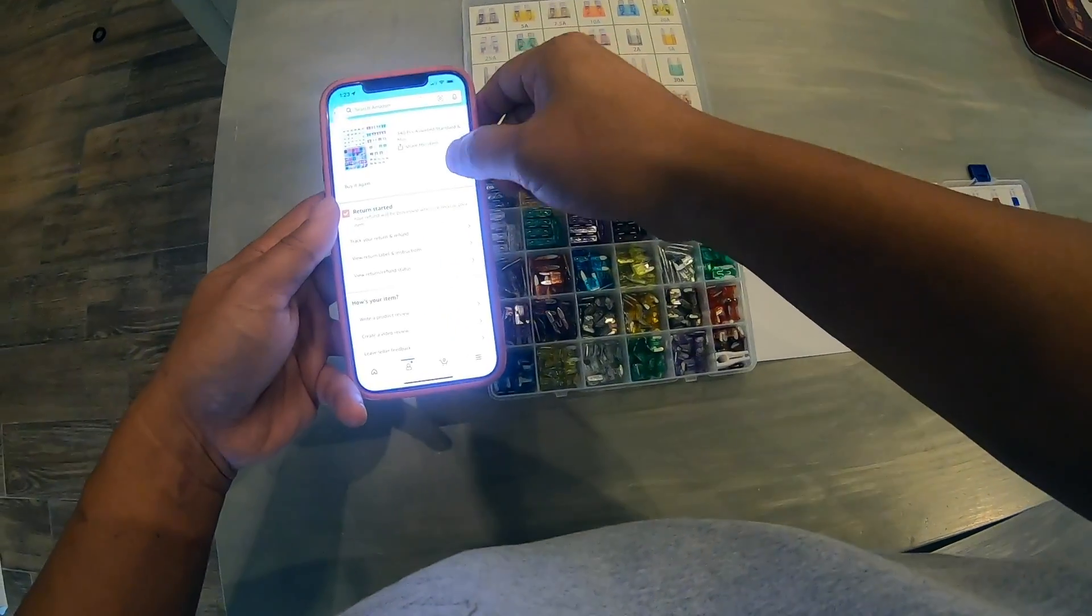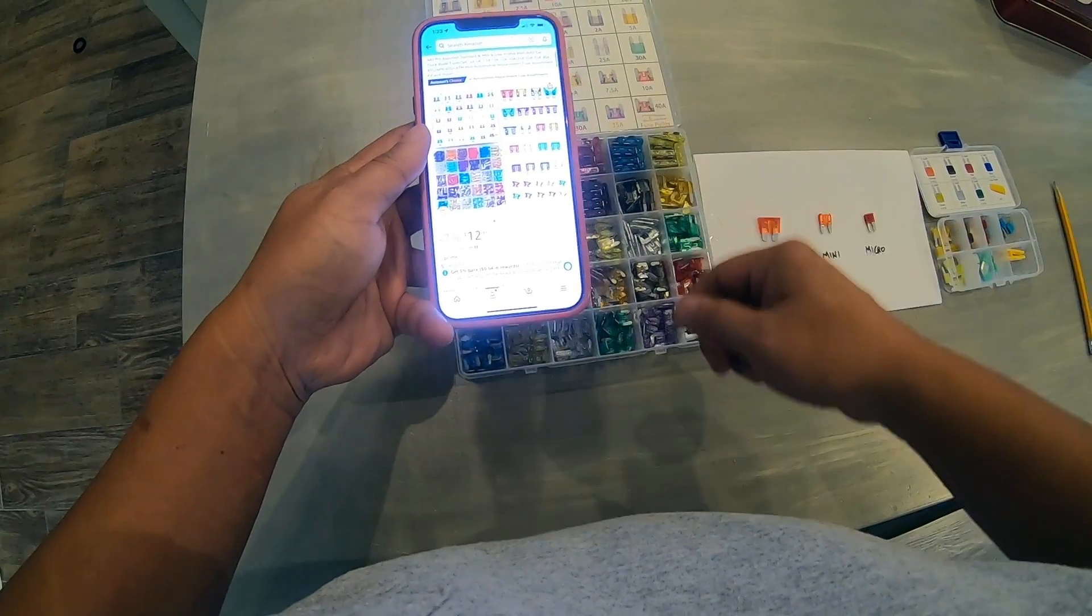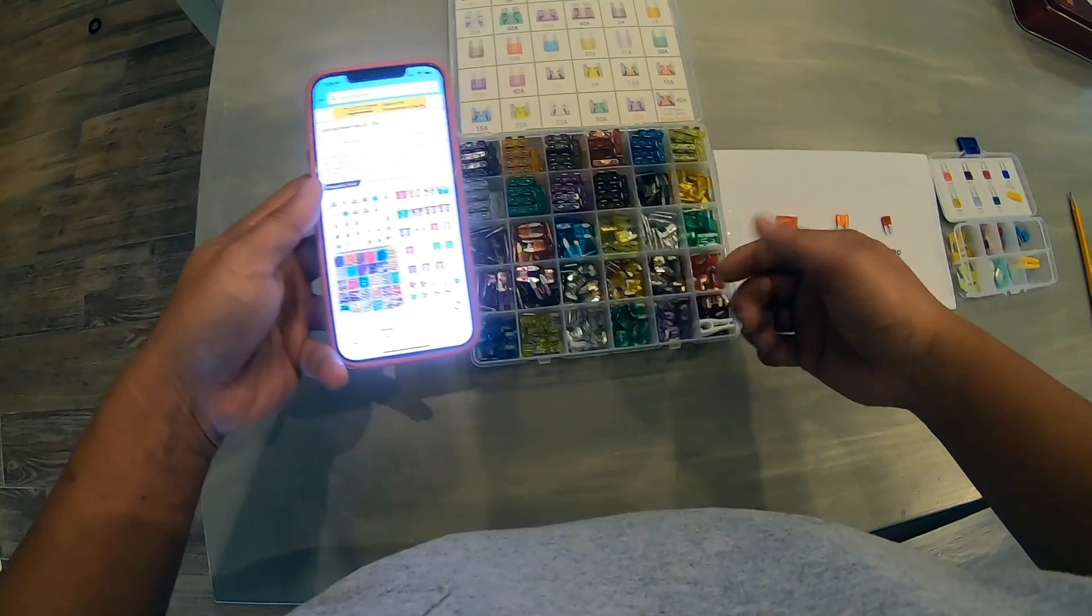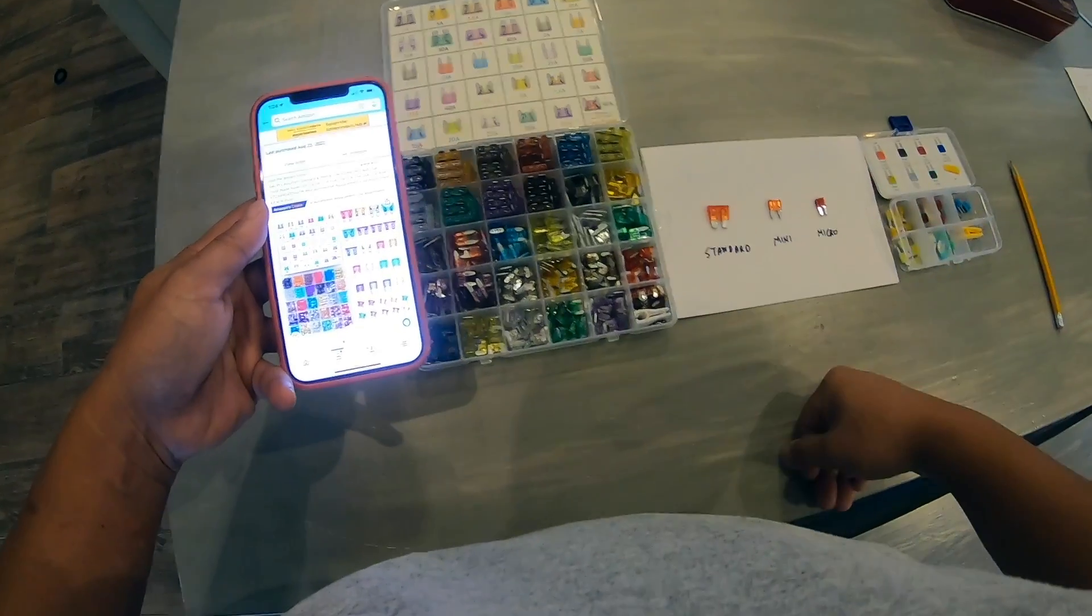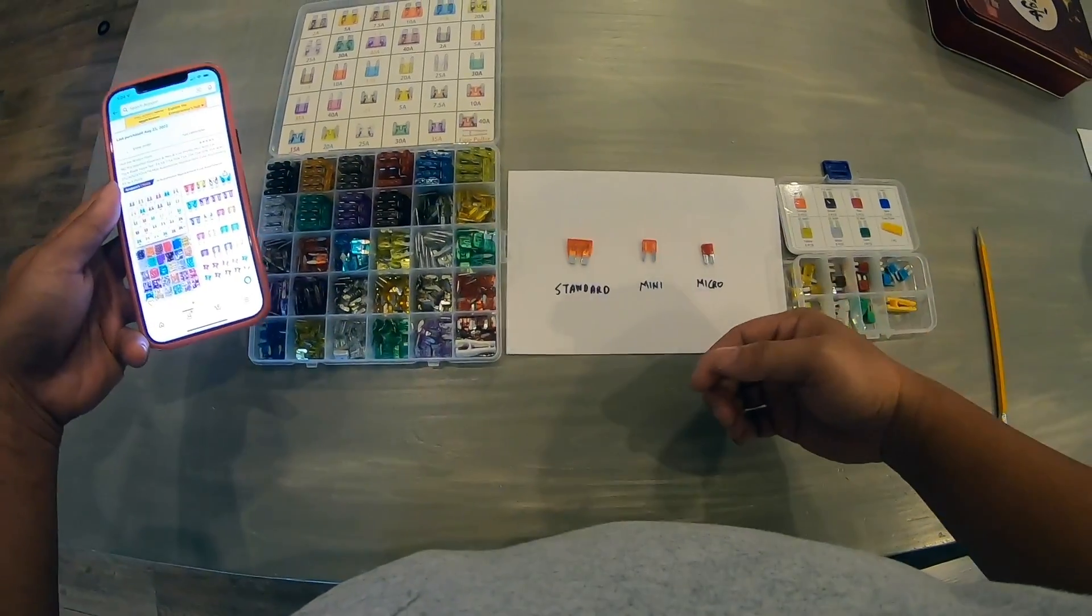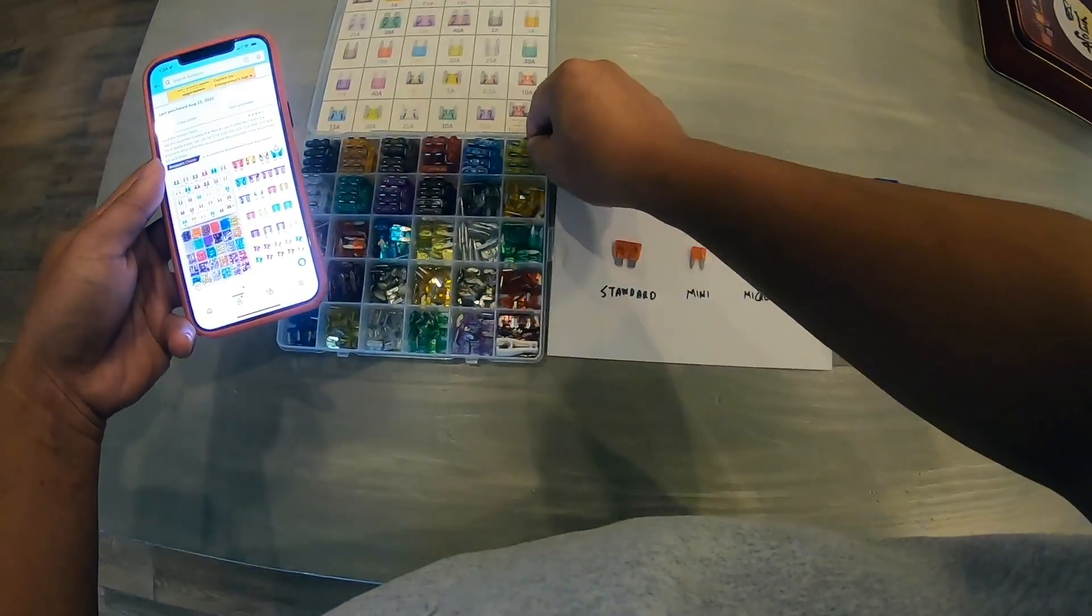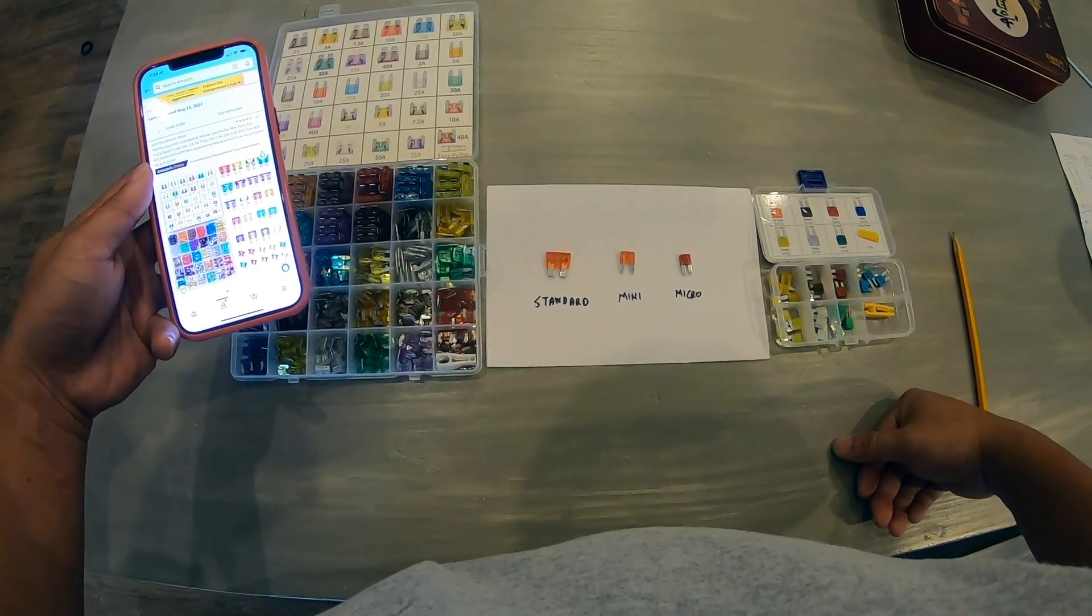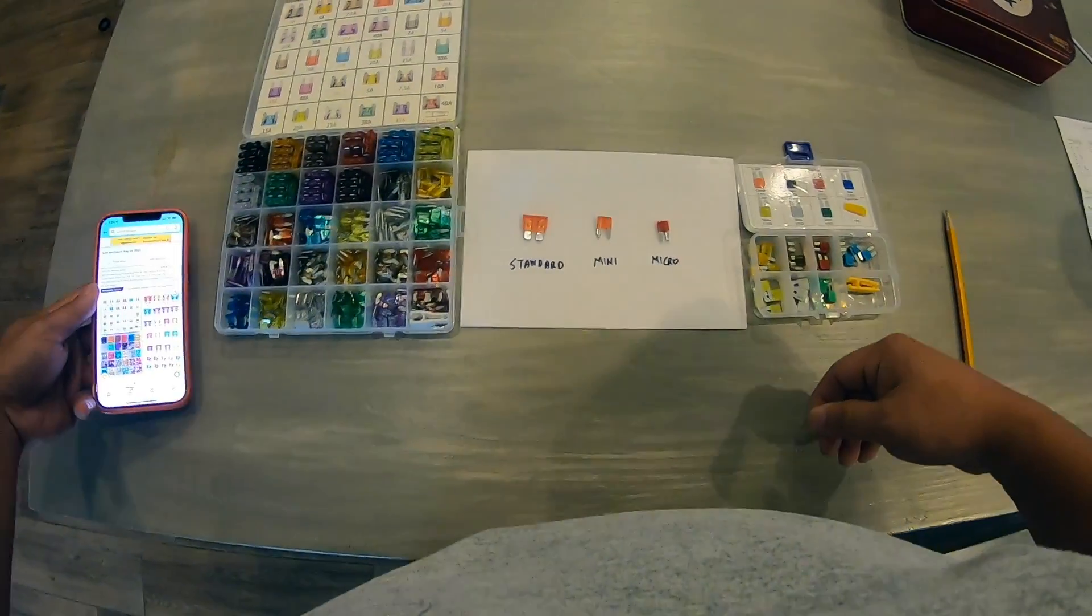This one right here costs $12.99, basically $13, and it comes with 340 pieces of fuses. So it's much cheaper, obviously if you do the math. If you buy it from AutoZone or Advanced Auto Parts, they're gonna cost you probably almost 50 cents per fuse. But over here it's much much cheaper if you buy it in bulk like this.